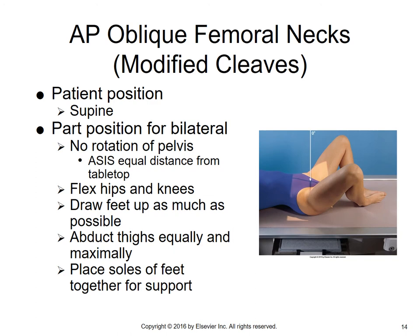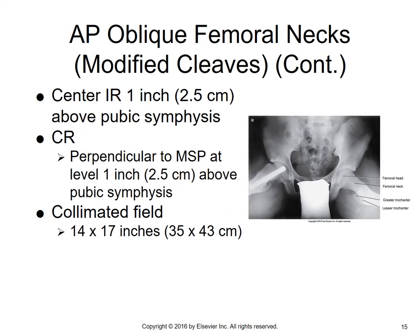The modified Cleaves is an AP oblique of the femoral necks. The patient is supine, and if doing it bilaterally, make sure there's no rotation of the pelvis — equal ASIS distance from the tabletop on both sides. Flex the hips and knees, draw the feet up as much as possible, abduct the thighs equally and maximally, and place the soles of the feet together for support. The central ray is perpendicular to the MSP at a level 1 inch above the pubic symphysis, using a 14 by 17 collimated field.